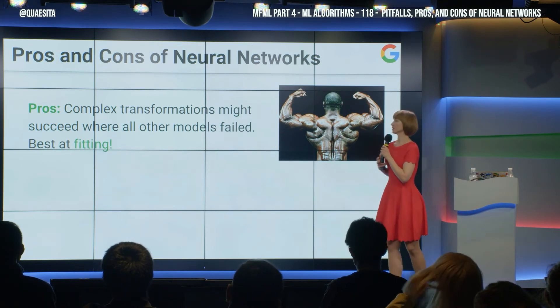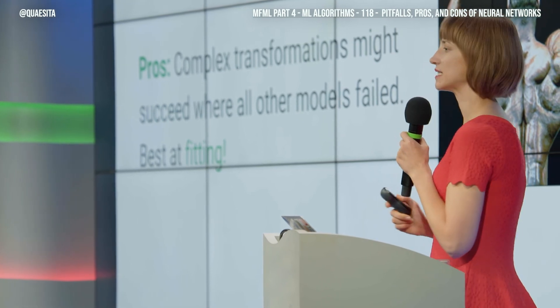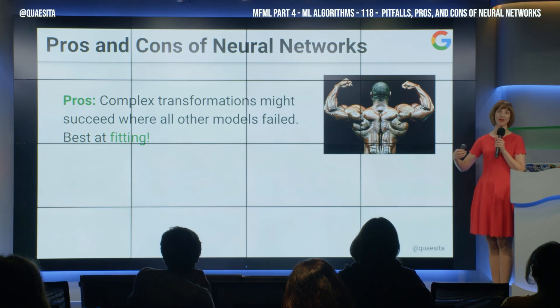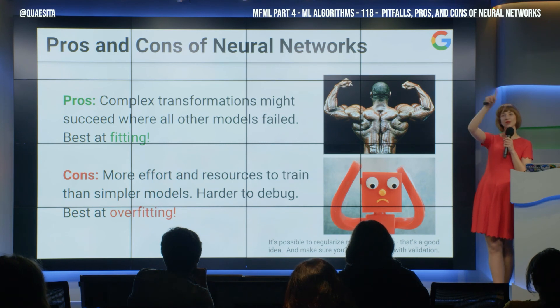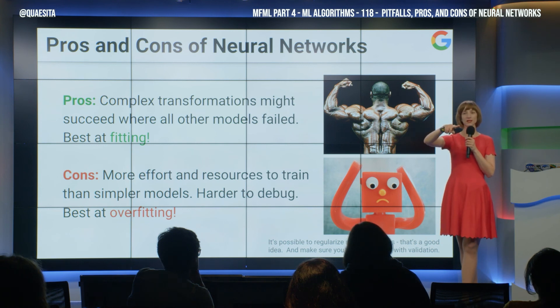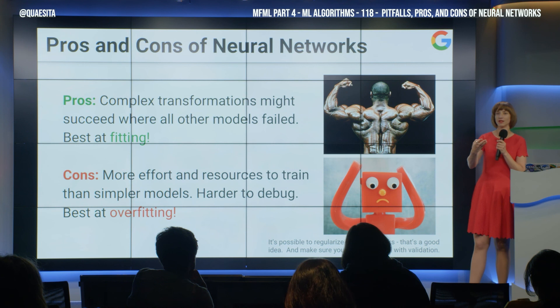So the pros and cons of neural networks. The pros are that these complex transformations have so much flexibility that if everything else has failed, these still might succeed — they are best at fitting. What's the con? What's best at fitting is also best at overfitting. And not just that — to work with these things takes more engineering effort and more computing resources, so you're riding that overfitting merry-go-round slowly and painfully. You don't want to start with these if you have no reason to suspect everything else is useless. Only play this game if you're pretty sure the simplest approaches aren't going to work.